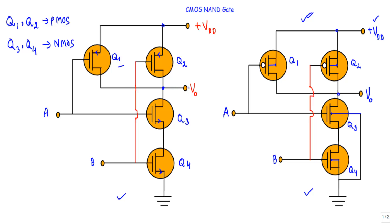The source terminal of transistor Q3 is connected to the drain terminal of Q4, and the source terminal of Q4 is connected to ground. The gate terminals of Q1 and Q3 are connected together with logic input A applied at that common point. The gate terminals of Q2 and Q4 are connected together with logic input B applied at that common point.